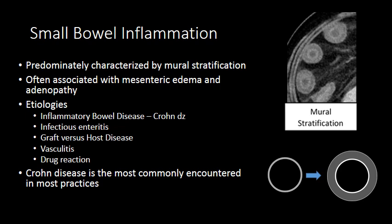Crohn's disease is going to be the most common form of small bowel inflammation that you'll encounter in your practice. Mural stratification is a form of wall thickening where the submucosa of the small bowel becomes edematous or inflamed, causing thickening of the wall with low attenuation submucosa. The inner wall or mucosa often appears hyperemic relative to the submucosa, and the outer wall may also appear hyperemic.